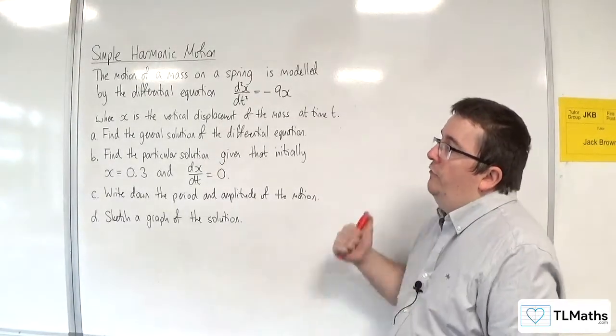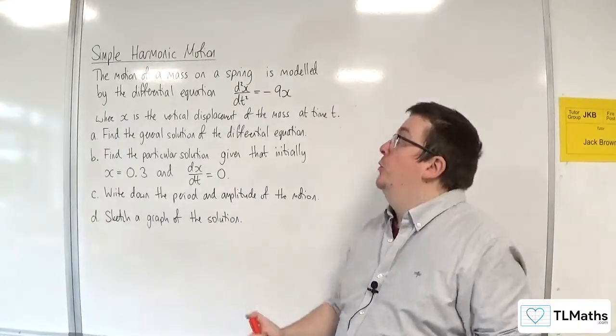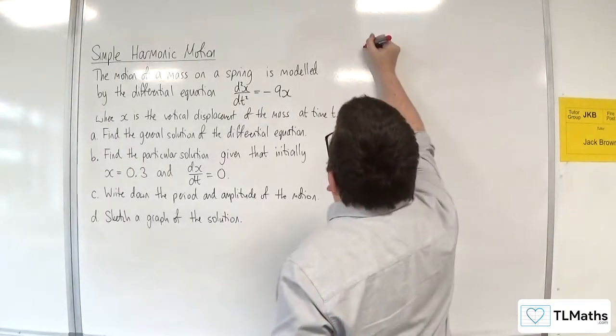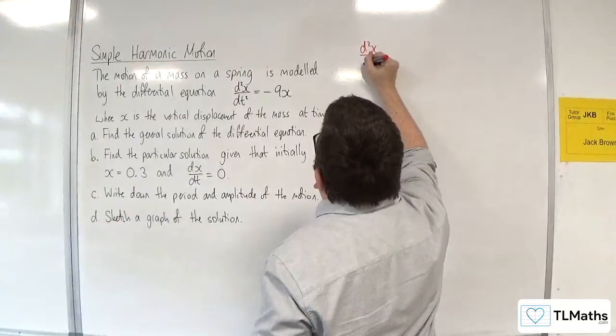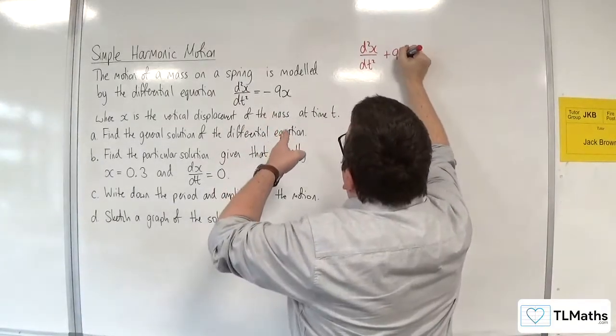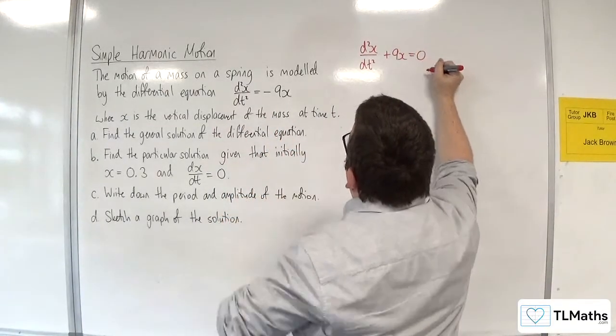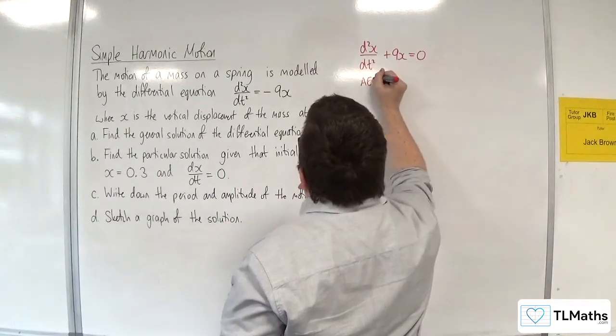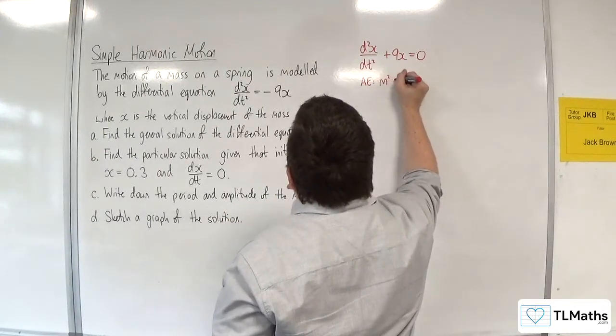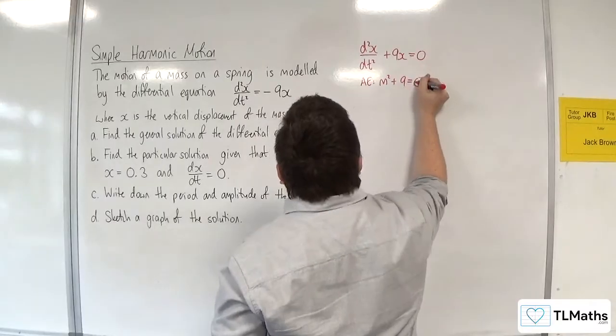Part A, find the general solution of the differential equation. So we've got d2x by dt squared. I'm going to add the 9x to both sides, and that's going to be equal to 0. So the auxiliary equation would be m squared plus 9 is equal to 0.